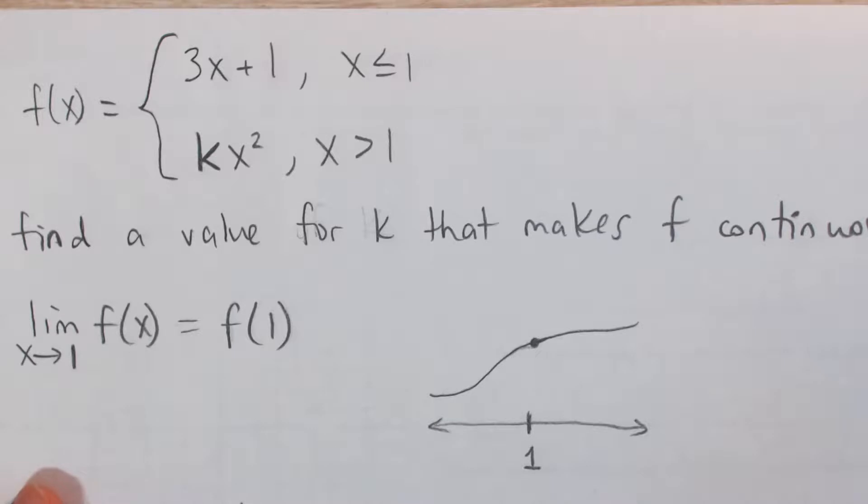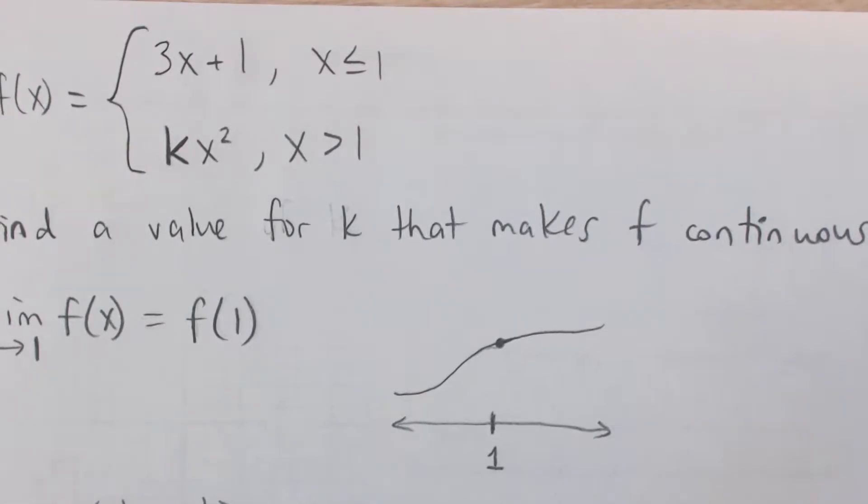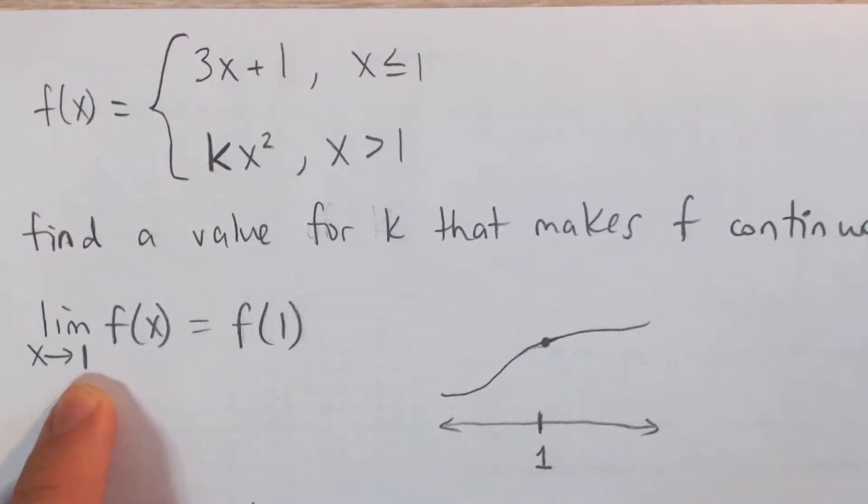And what we want to do is find a value for k that makes the function continuous. And if you remember what continuous means, rigorously, it means that the limit as it approaches that value, in this case 1.